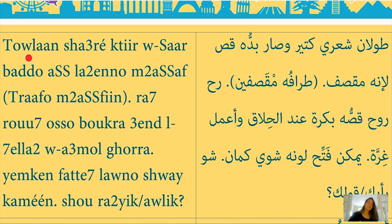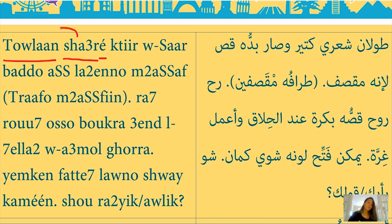Now let's read it slower and break it down. 'Sha'ari tool on' — sha'ar means hair, sha'ari means 'my hair,' and tool on means 'my hair has grown.' It has grown. It's not a verb, it's a participle, and it's a masculine participle because the word sha'ar is a masculine word. That's why we need a masculine participle: tool on. Sha'ari tool on — my hair has grown.